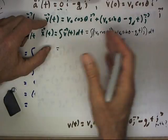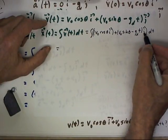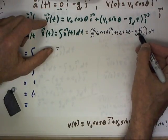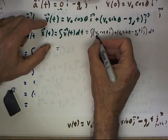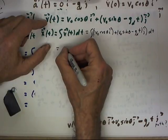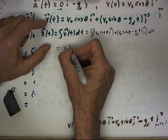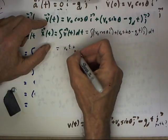Following the integration conventions, i is just a constant, j is just a constant. Everything but t basically is a constant. The integral of v0 cosine theta i is just v0 t plus a constant.